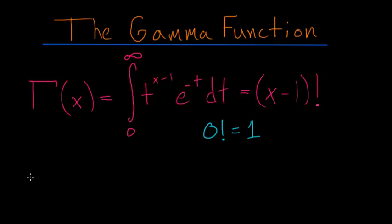So if we evaluate the gamma function when x is equal to 1, this is equal to 1 minus 1 factorial, which is 0 factorial.